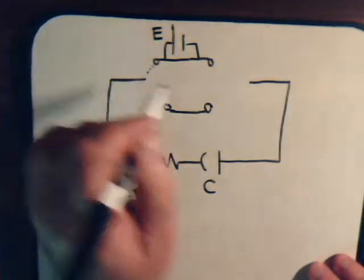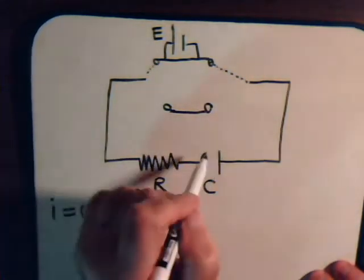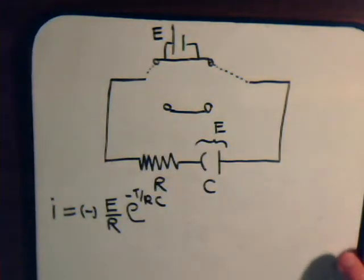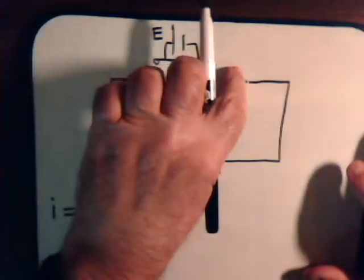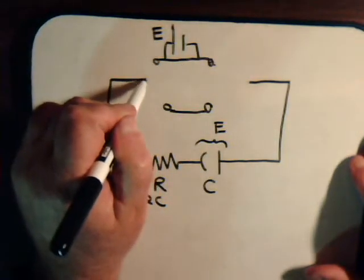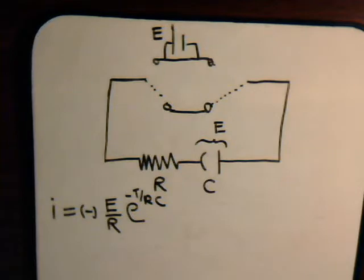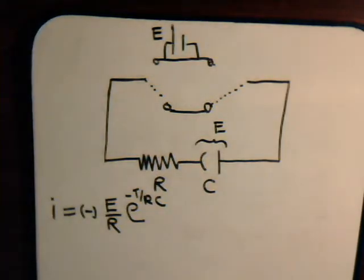We consider a simple circuit with a battery, a resistor, and a capacitor. Initially the battery is hooked up to the circuit and charges the capacitor to the potential of the battery, then the current stops. We then discharge by completing a switch, and the capacitor discharges with the current equal to the discharging equation, where the minus sign means the discharge current is in the opposite direction to the charging current.